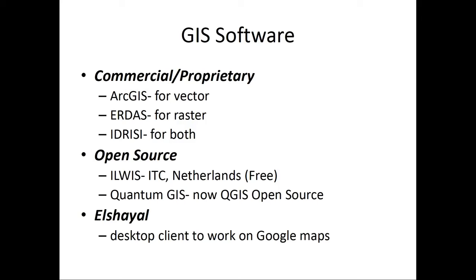What are the important GIS software options? There are two classes: commercial proprietary ones and open source ones. In the commercial proprietary category, ArcGIS is very popular but expensive; it is primarily used for vector data sets. Erdas Imagine is for raster data sets. Idrisi can work with both and is considered more affordable; it is used in many developing countries.